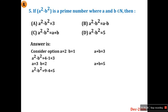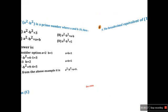A square minus B square is equal to A plus B into A minus B. So option C is right answer.